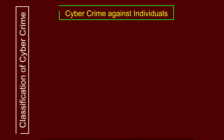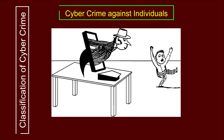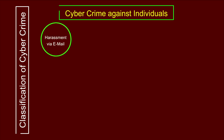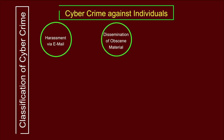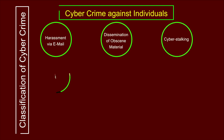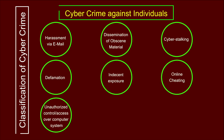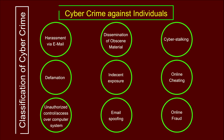We will start with cybercrime against individuals, which deals with crimes against a person or individual entity. Different types of crime in this category are: harassment via email, dissemination of obscene material, cyberstalking, defamation, indecent exposure, cheating, unauthorized control or access over a computer system, email spoofing, and online frauds — nine subcategories in total.